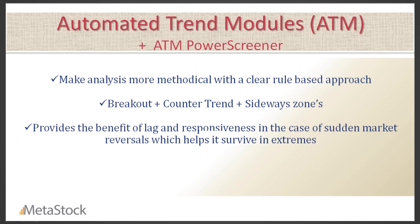Step one is to give you a clear rule-based approach with indicators based on not just breakout modules, but also counter-trend modules and sideways zones. Things like the zone detector help us figure out if the market is dormant or sideways — that's a very big value add. The indicators also need to be responsive and not work on fixed values, because a particular value does not necessarily need to have a global fit across the board.